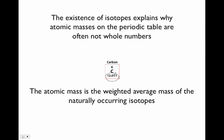This is the atomic mass. Instead of being the number of protons plus neutrons, it's the weighted average mass of naturally occurring isotopes.